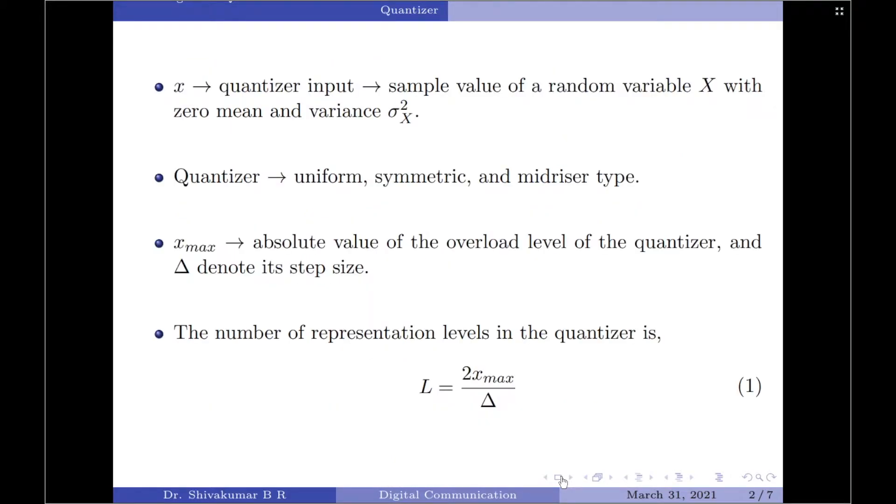To start with, let us consider the quantizer input x represents the sample value of some random variable capital X with mean 0 and variance σ_X². Now, let us assume the quantizer to be uniform, symmetric and mid-riser type. Let x_max represent the absolute value of the overload level of the quantizer input and Δ denote the step size.